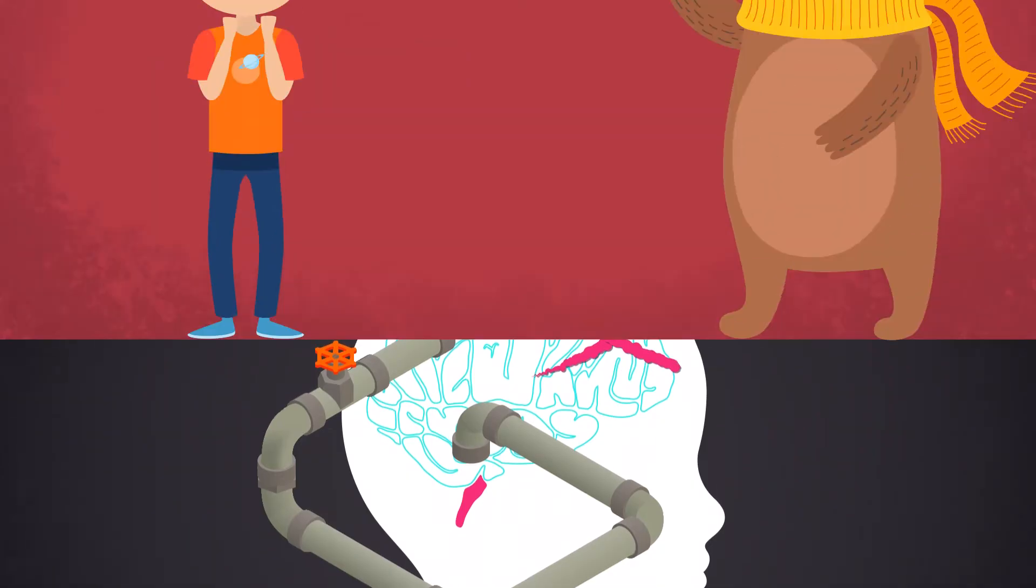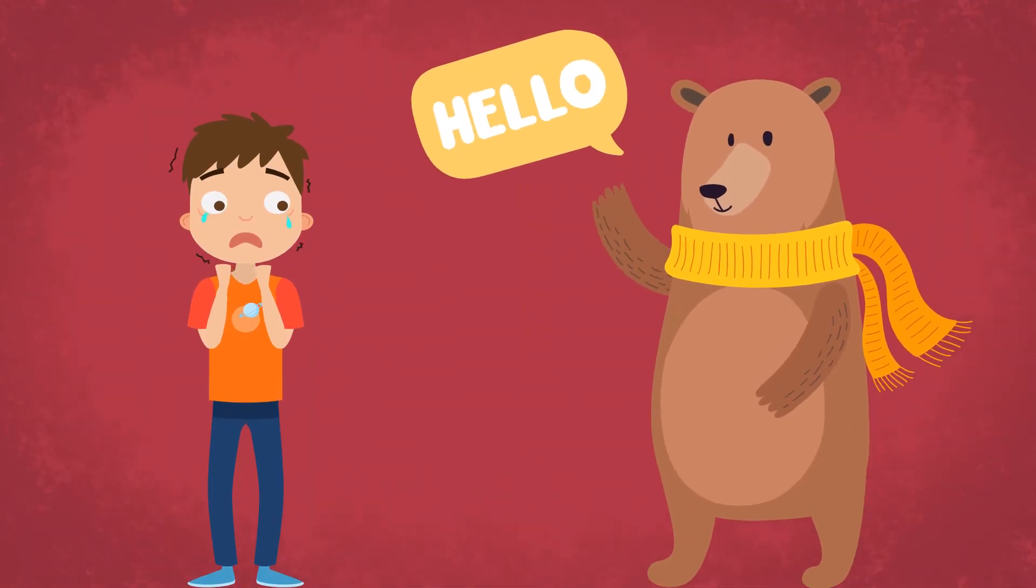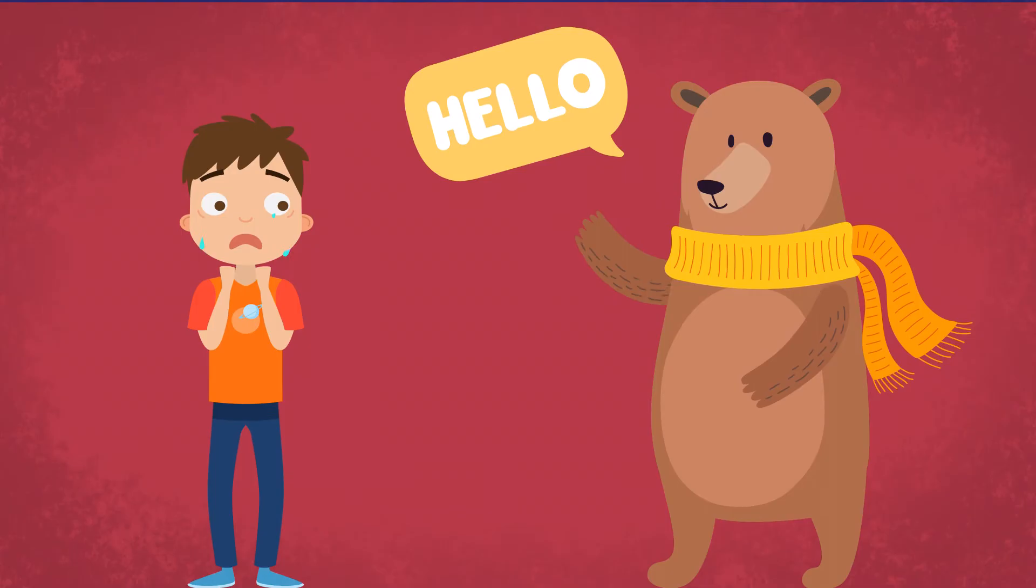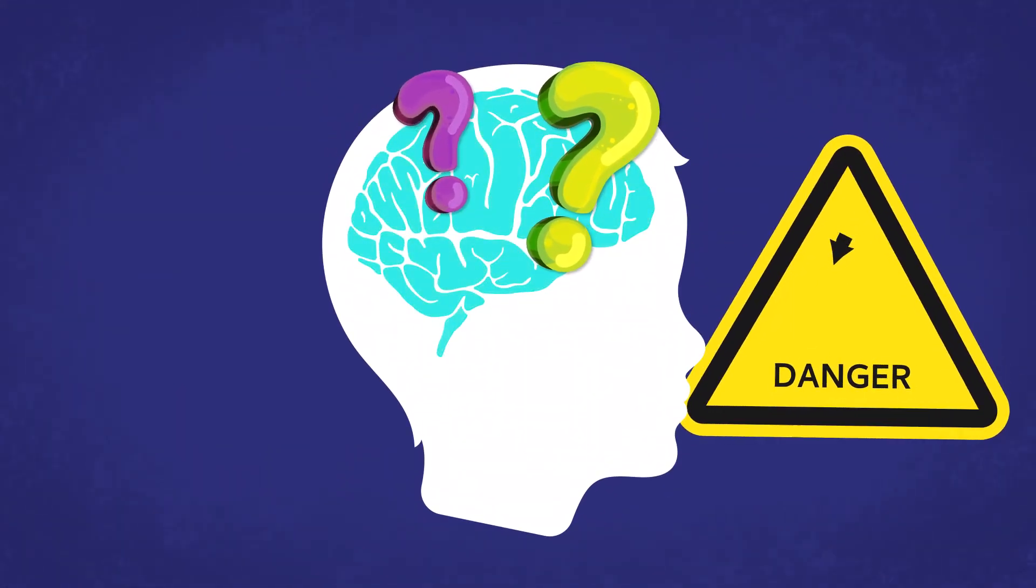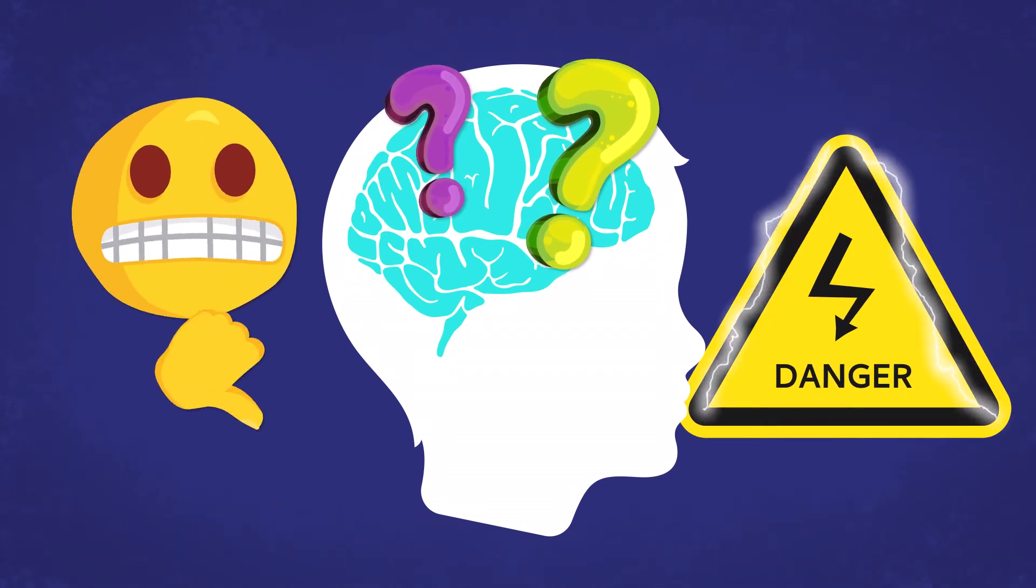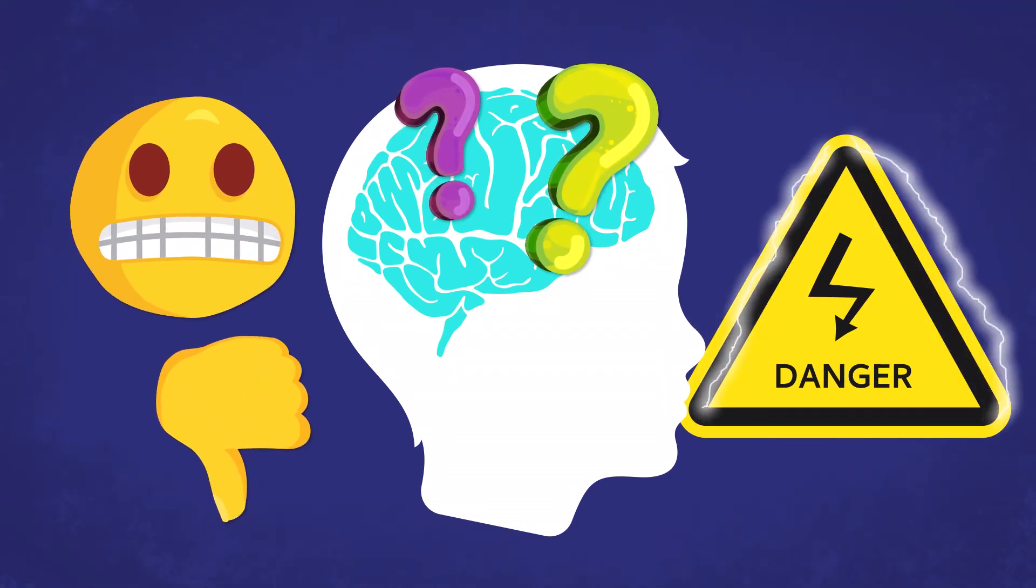This can be really helpful for keeping us safe when we're in danger, like if we came across a bear and our body needed to respond quickly without having time for the smart brain to think it through. But our brain can't always tell the difference between danger and when we're just feeling really big emotions, like stress.